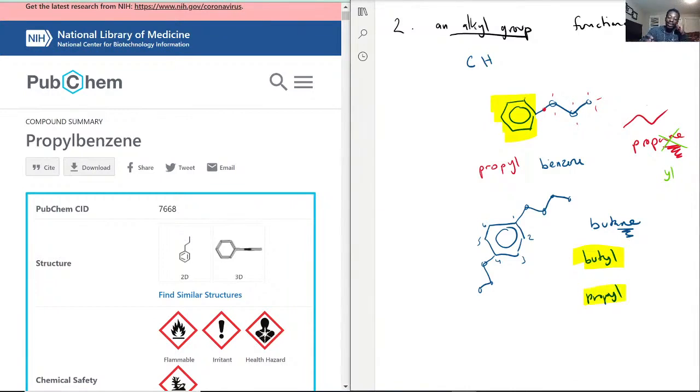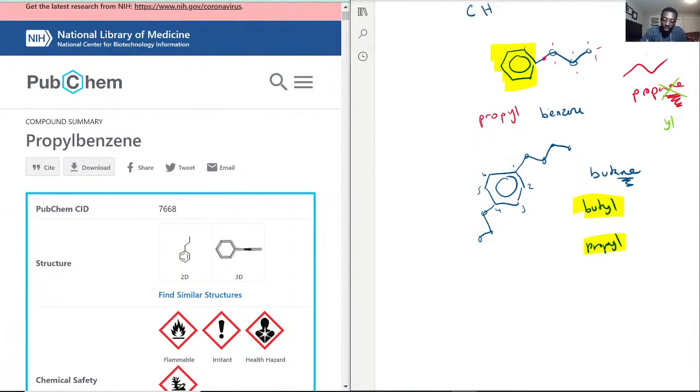And how does it come together? This molecule right here would be called one - in fact it makes you put it in alphabetical order and B goes before P - so one butyl, four propyl benzene.